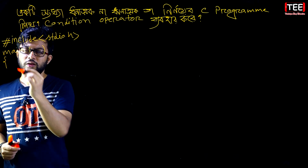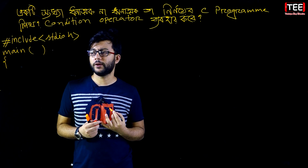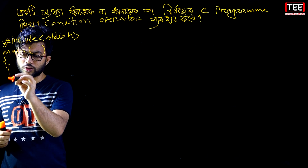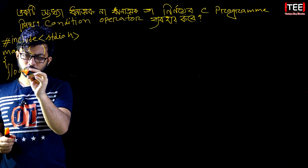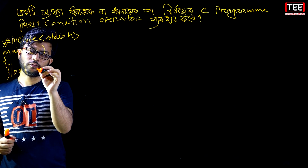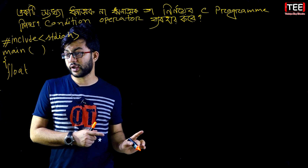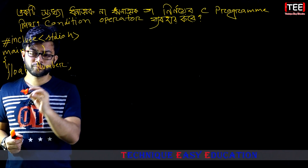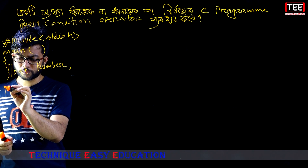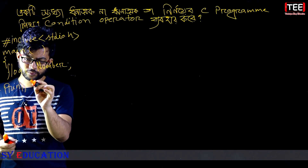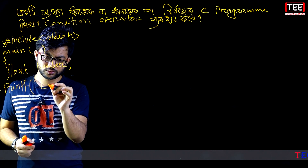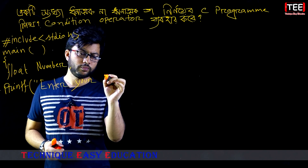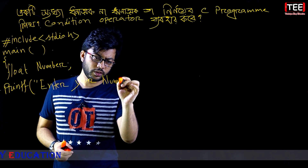The main function starts. We will start the program with the variable declaration line. We declare a float variable called number. Then we use printf to display the message: enter your number.